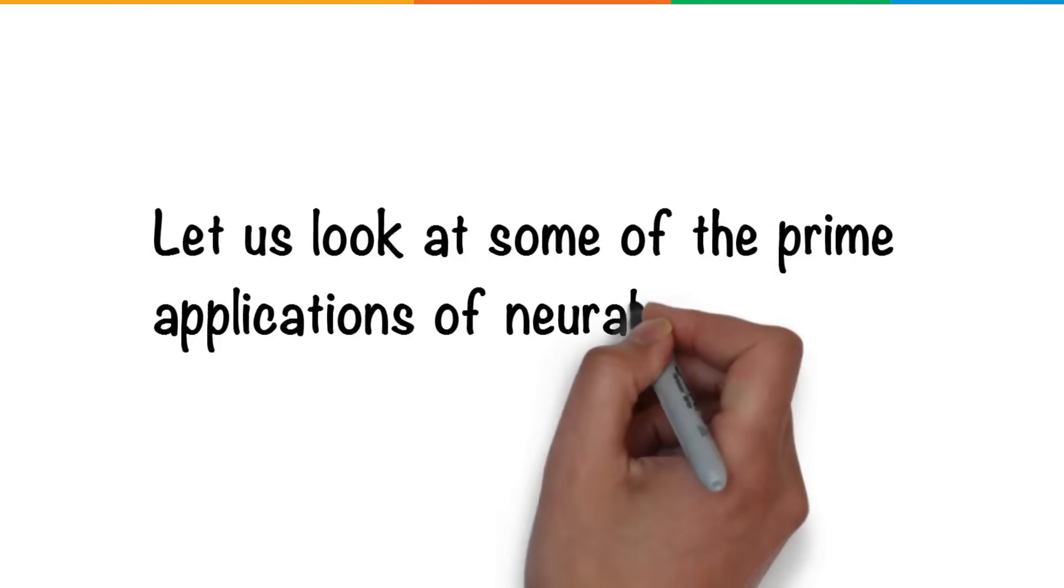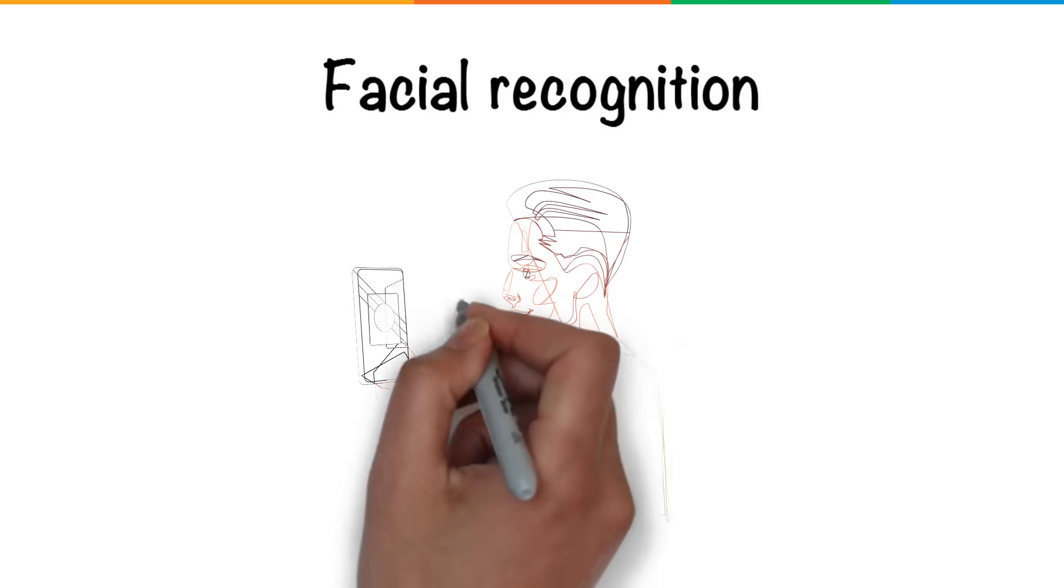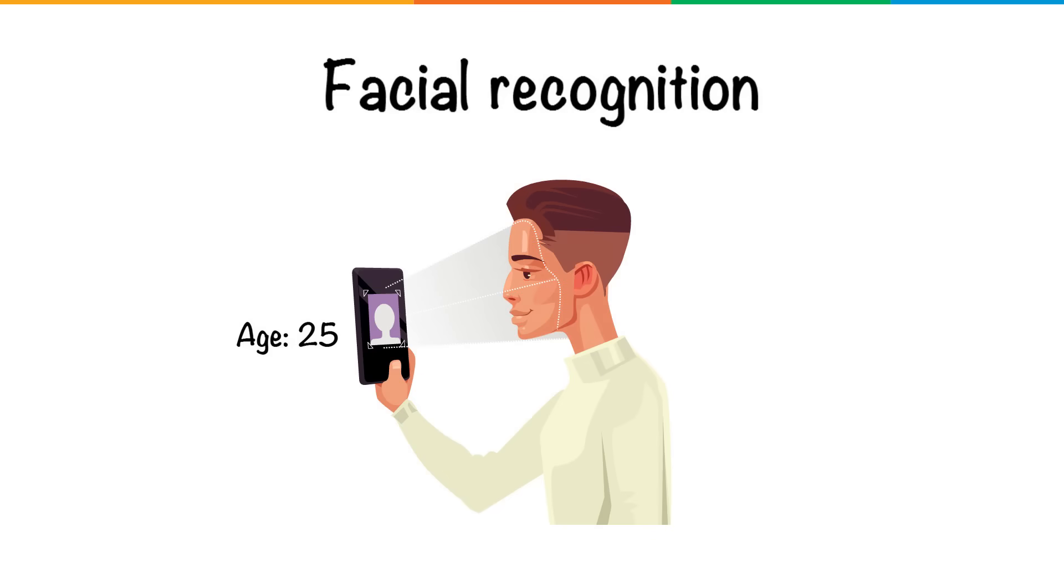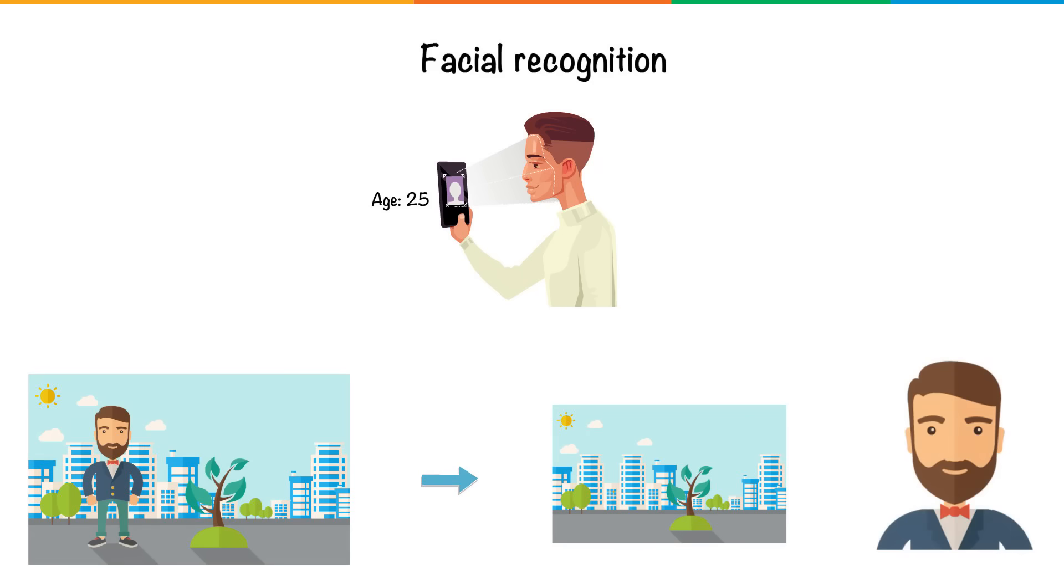Let us look at some of the prime applications of neural networks. Facial recognition: Cameras on smartphones these days can estimate the age of the person based on their facial features. This is neural networks at play, first differentiating the face from the background and then correlating the lines and spots on your face to a possible age.